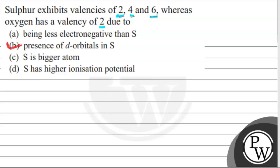Now, option A being less electronegative than sulfur. Oxygen jo hai, wo more electronegative hota as compared to sulfur, and its electronegativity is 3.5. So, this option is not correct.